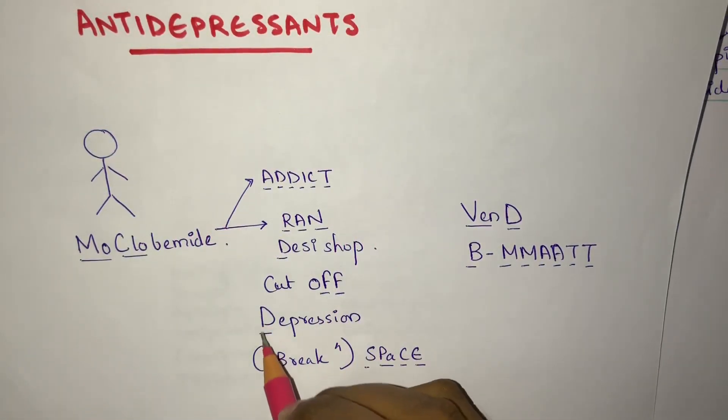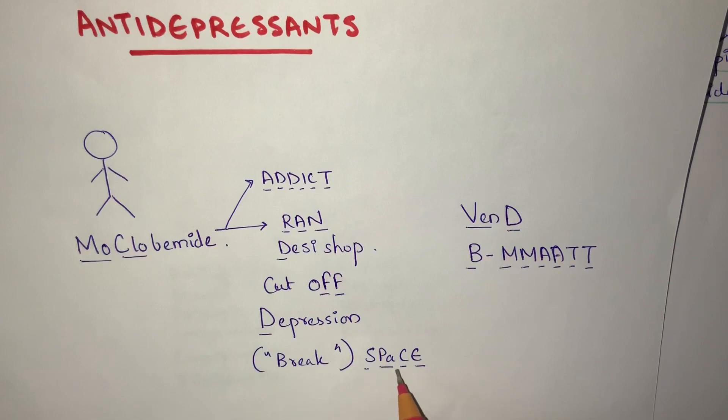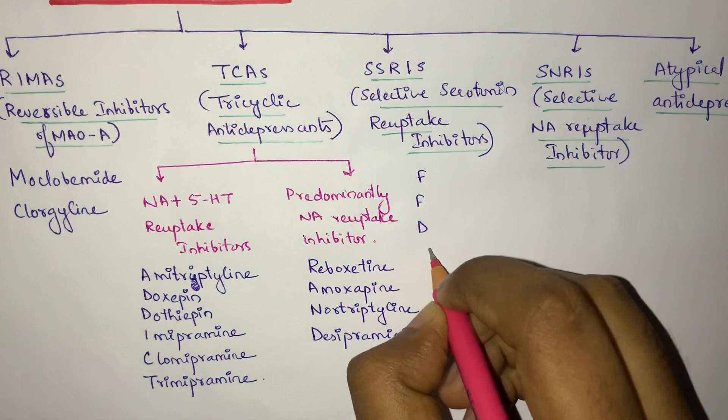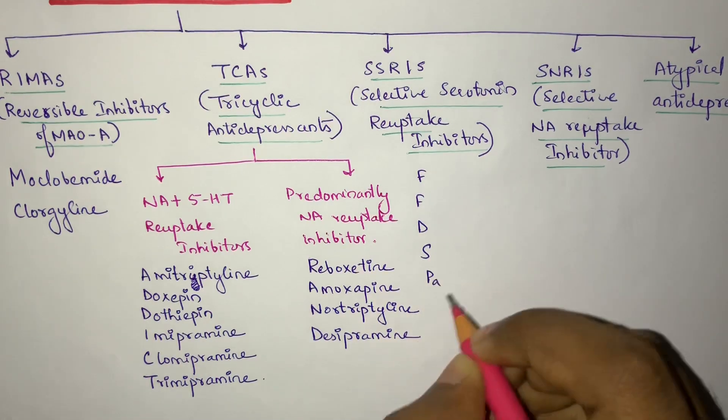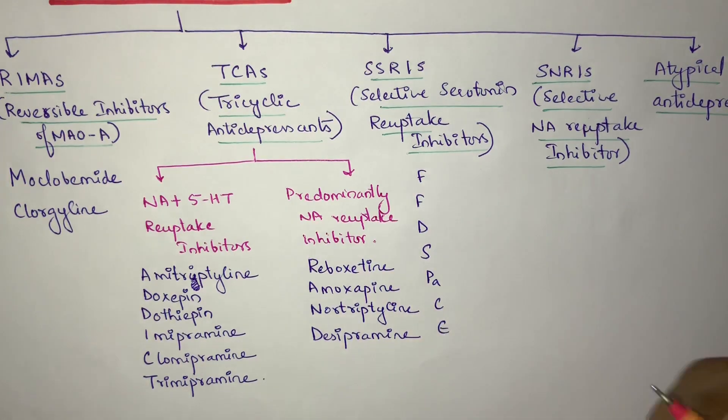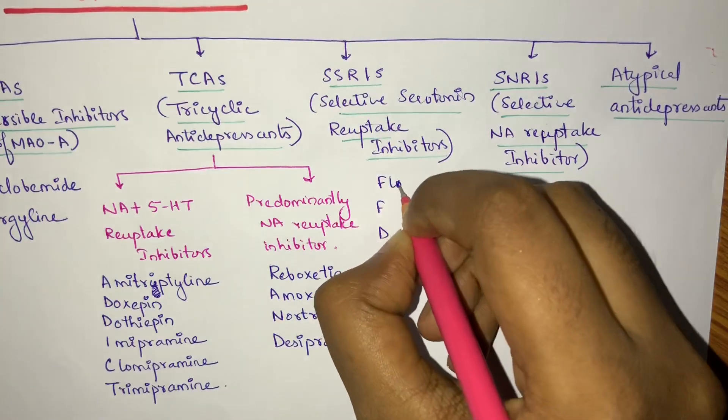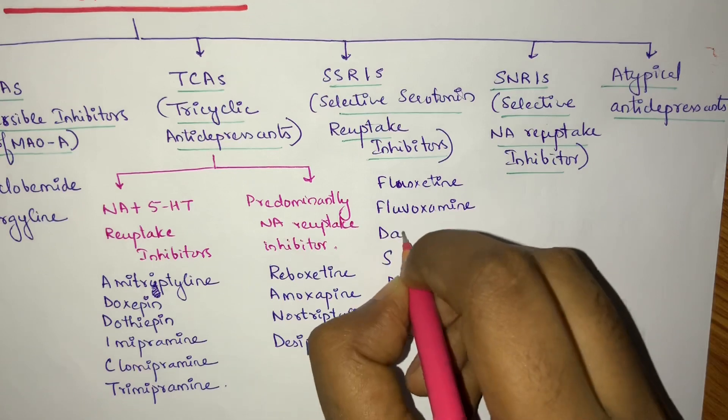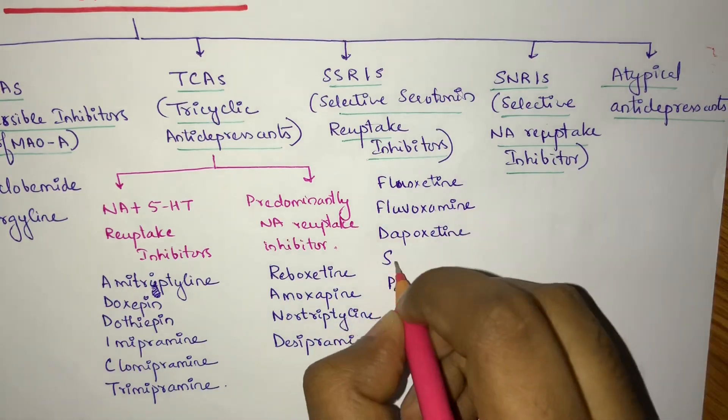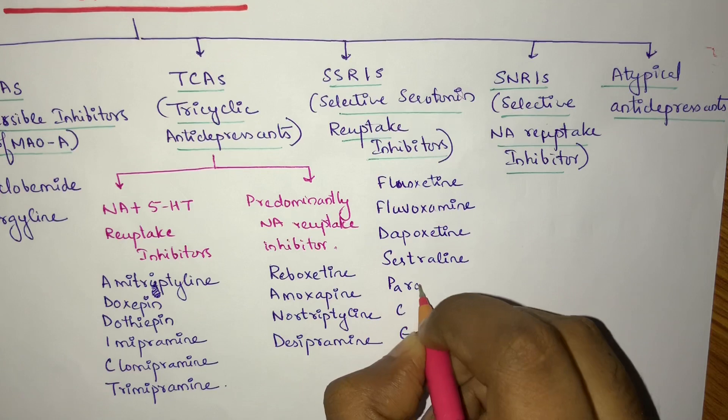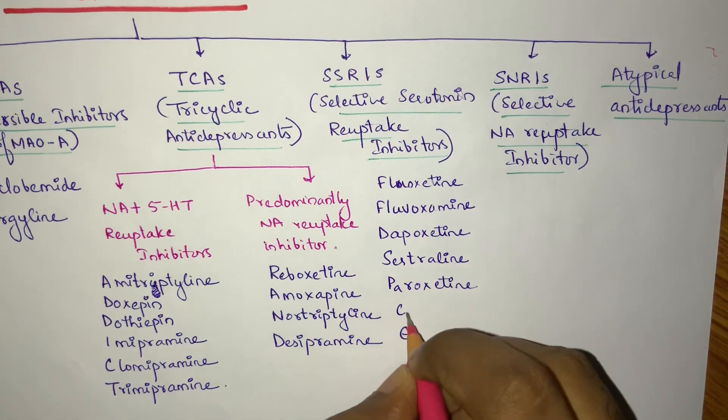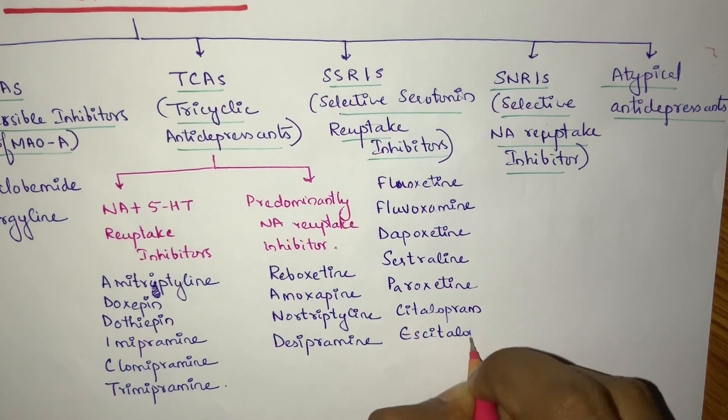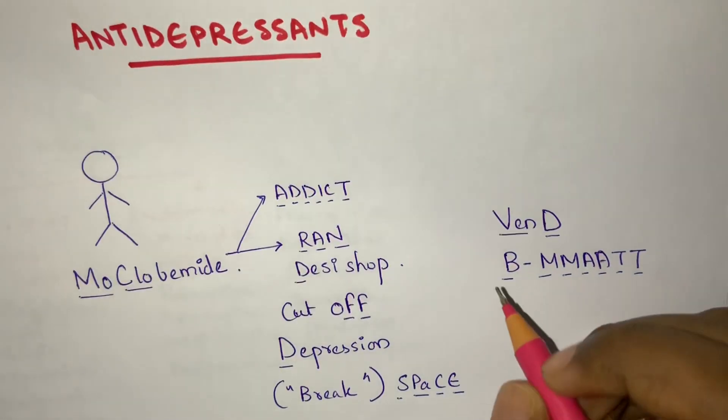Then is FFDSPACE. The first F stands for Fluoxetine, next one is for Fluvoxamine, D for Paroxetine, S for Sertraline, P for Paroxetine, A for Paroxetine, C is for Citalopram, and E for Escitalopram. So these are the SSRIs.